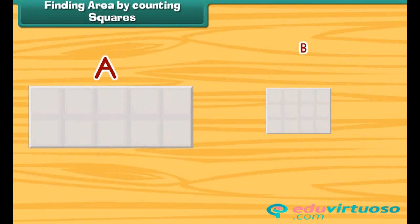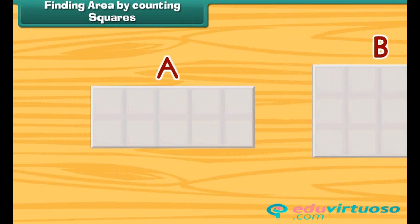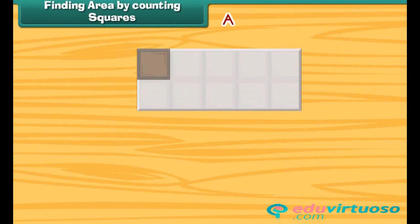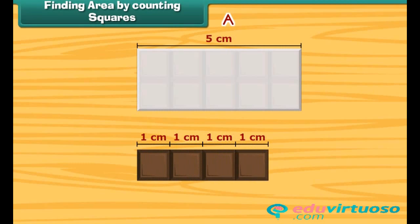Friends, we have these two chocolates. Let us find out which one is bigger and which one is smaller. We will take the help of one square piece of chocolate of side 1 cm. The length of chocolate A is 5 cm. So, 5 squares can be arranged along its length.